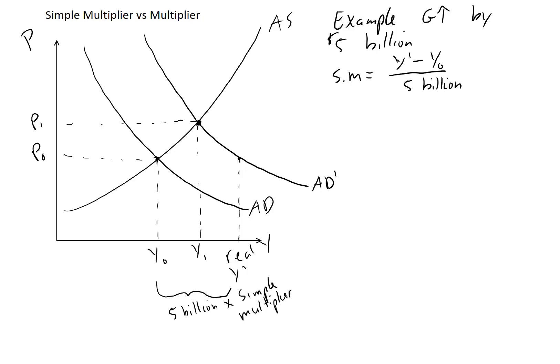In general, we can think of the simple multiplier as being equal to the horizontal shift of the AD curve over the change in capital A — autonomous aggregate expenditure — which includes things that don't affect the slope of the AE curve and our demand-determined output.